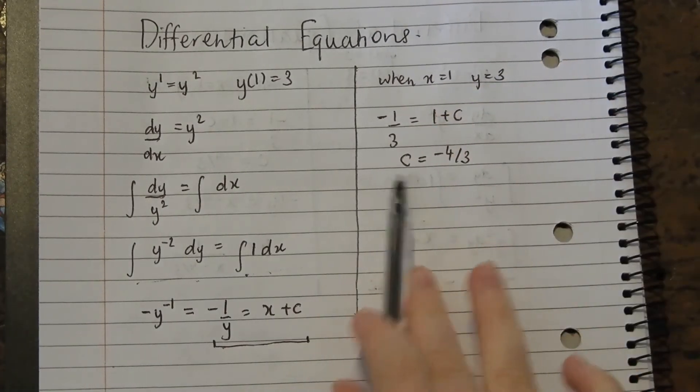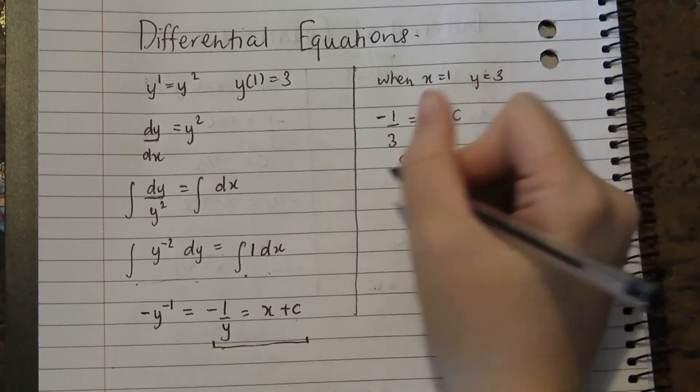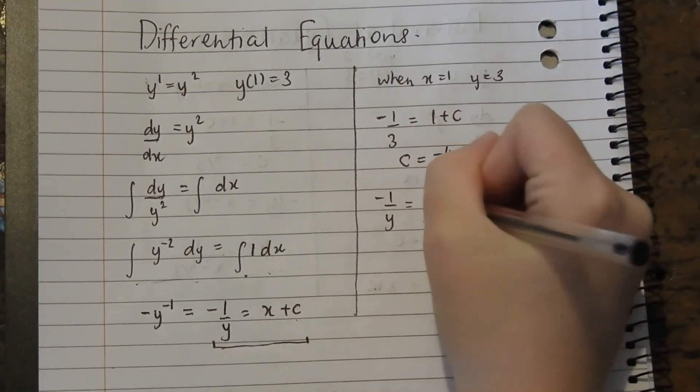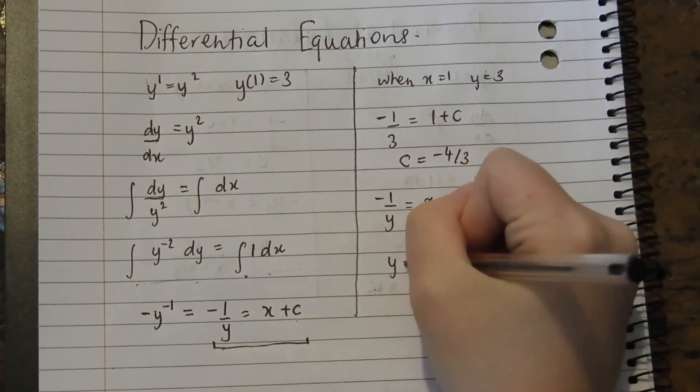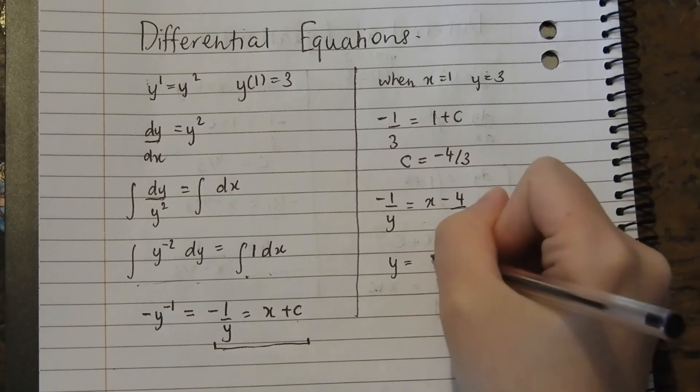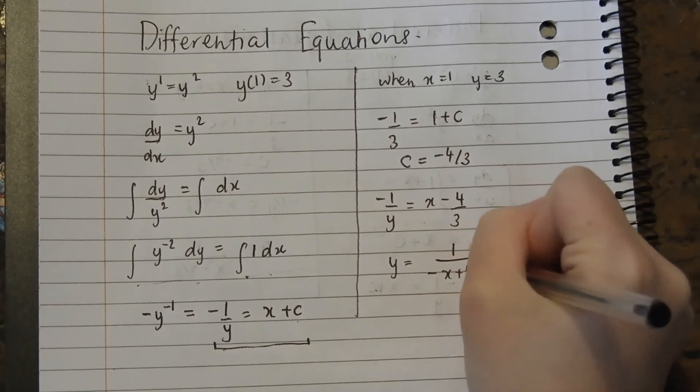Now we substitute this c value into this equation. So we get negative 1 on y equals x minus 4 on 3. So y equals 1 on negative x plus 4 on 3.